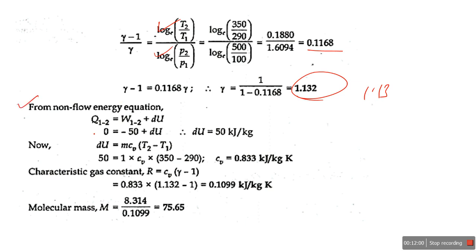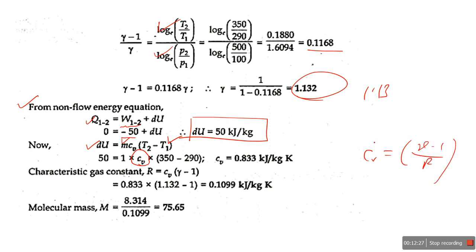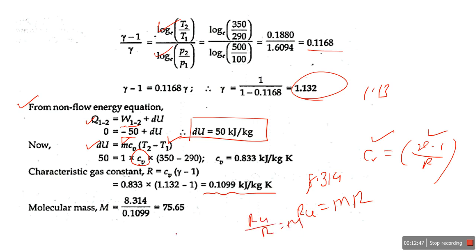For the adiabatic process Q = 0 and work done is given as negative (work on system). From the first law, change in internal energy = -W. Both temperatures are known so we can find specific heat CV. Using CV = R / (gamma - 1), with gamma known, we calculate R. Then using R = M̄ × R_universal (where R_universal = 8.314), we find the molecular mass M ≈ 75.65.